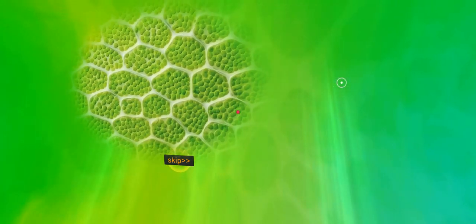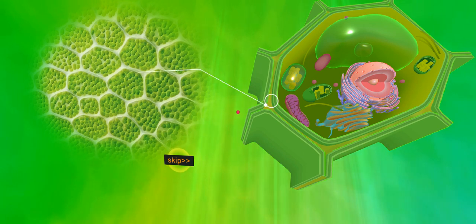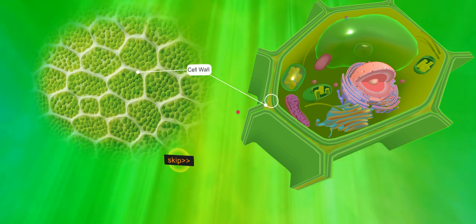Cells are of two types, eukaryotic and prokaryotic, based on whether they contain a nucleus. A cell wall is a structural layer surrounding some types of cells, situated outside the cell membrane.